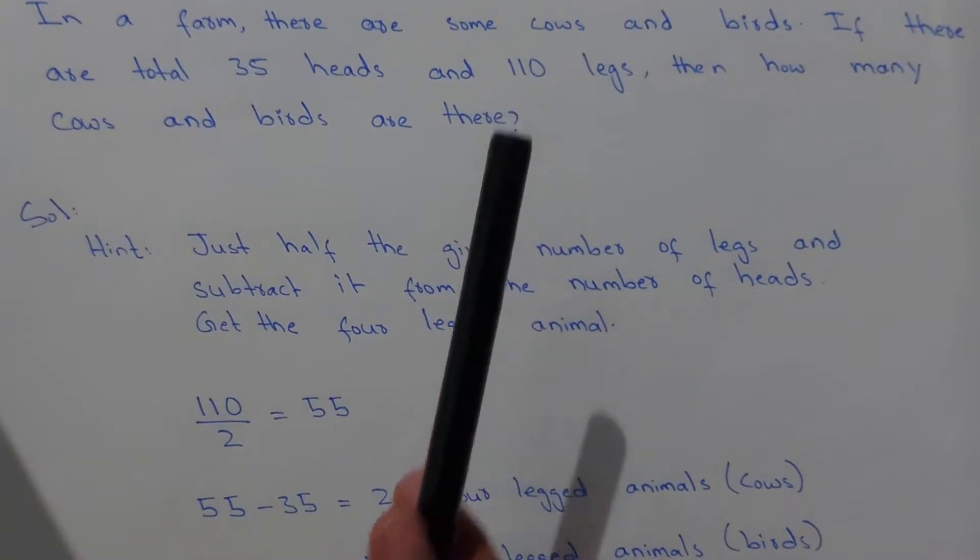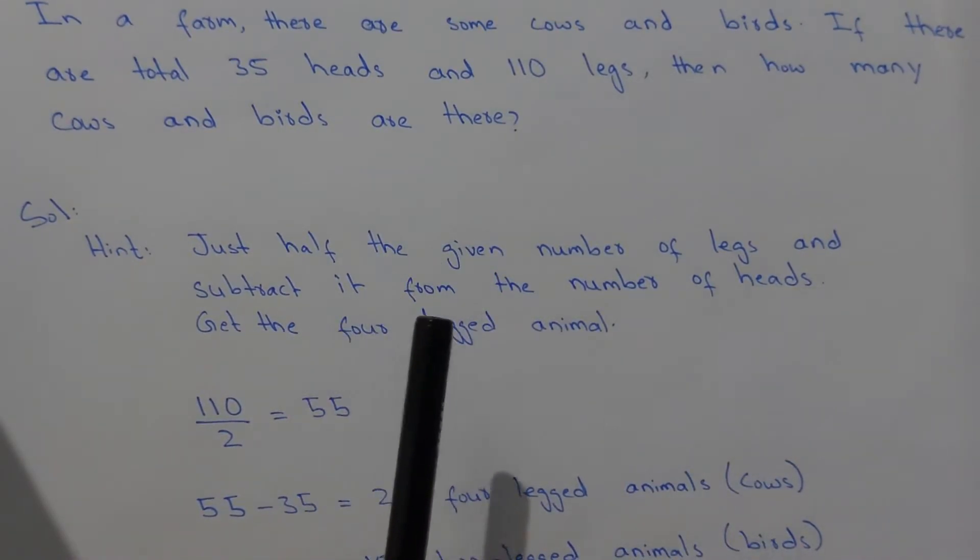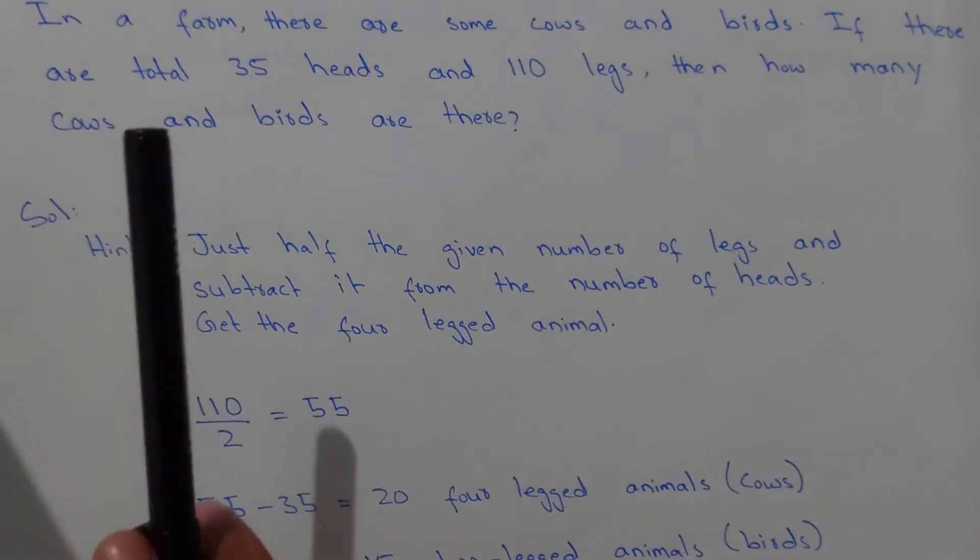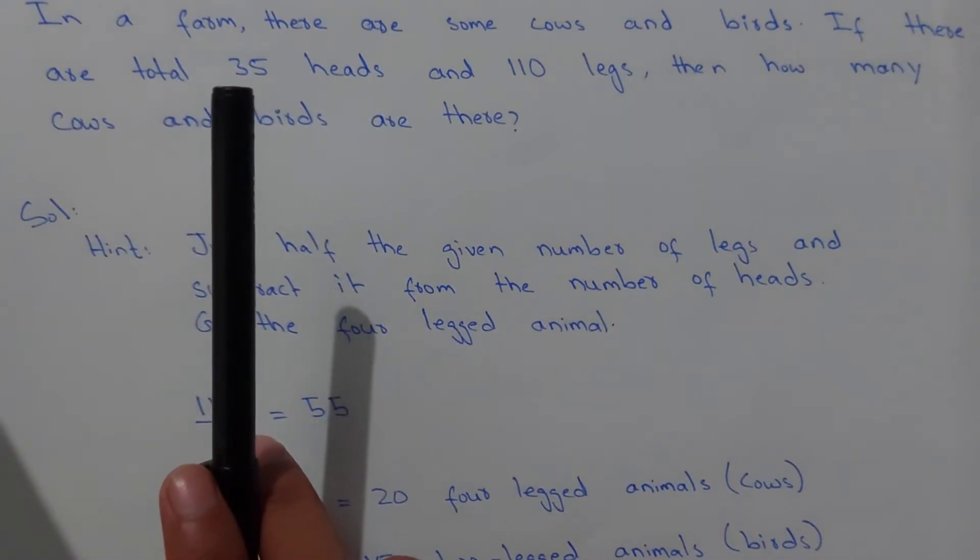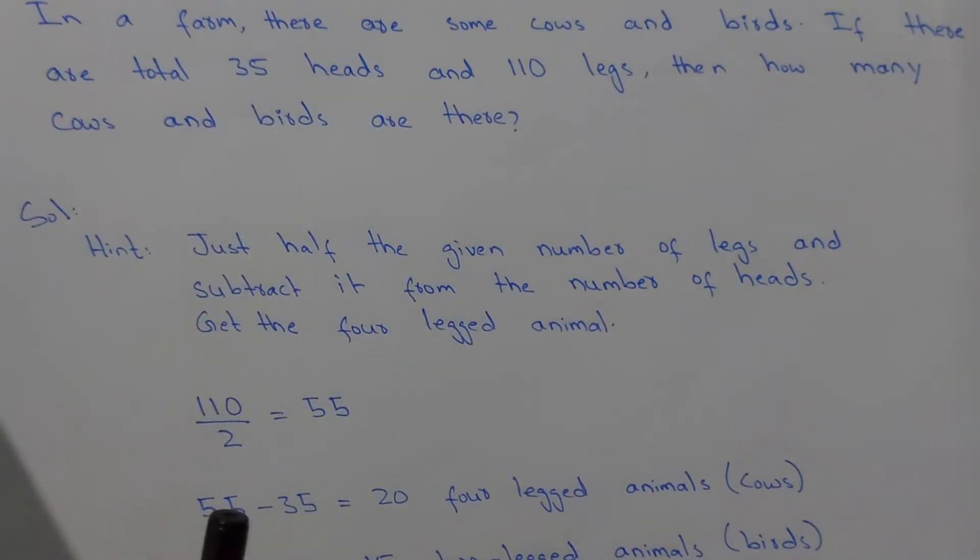And we subtract it from the number of heads: 55 minus the number of heads, there are 35 heads. It means there are total 35 animals. So 55 minus 35, it means 20 four-legged animals. It means we have 20 cows.